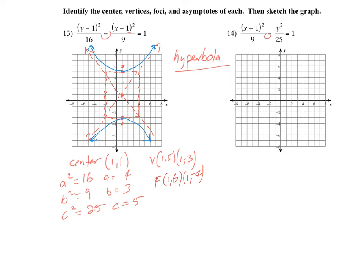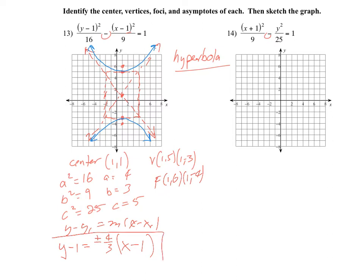To get the asymptote equations, use point-slope with the center (1, 1). We went up 4 and over 3, so slope is ±4/3. Equations of asymptotes: y − 1 = ±(4/3)(x − 1). This point-slope form makes life much easier.